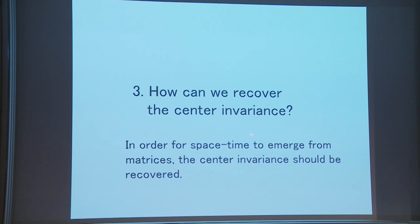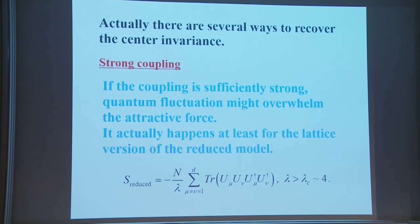How can we recover the center invariance? For space-time to emerge from matrices, the center invariance must be recovered. There are several ways to do this. One is strong coupling: if the coupling is sufficiently strong, quantum fluctuation might overwhelm the attractive force. It actually happens, at least for the lattice version of the reduced model — if λ is greater than some critical value, then center invariance is recovered.